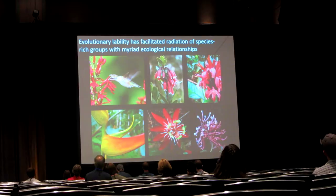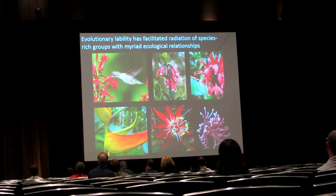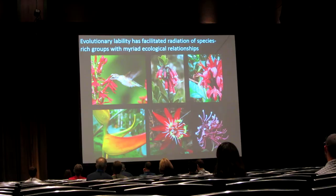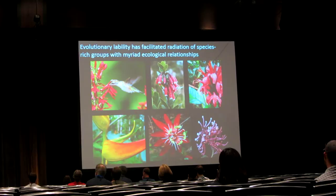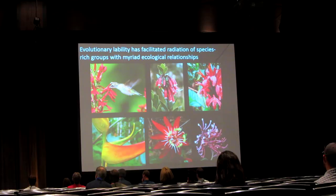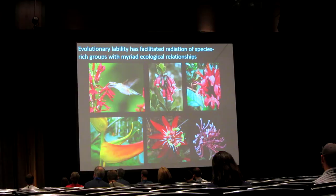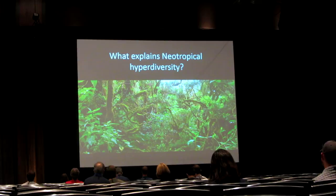This evolutionary lability I see in neotropical bellflowers is by no means confined to that clade alone — in fact it characterizes many understorey clades in Andean cloud forests. These groups shift pollinators, shift fruit types, and switch their growth habits somewhat frequently. I would argue that the ability to shift these traits so rapidly has allowed the formation of incredibly species-rich groups in Andean cloud forests — not just tens or dozens of species, but hundreds, such as the Centropogon clade with 550.